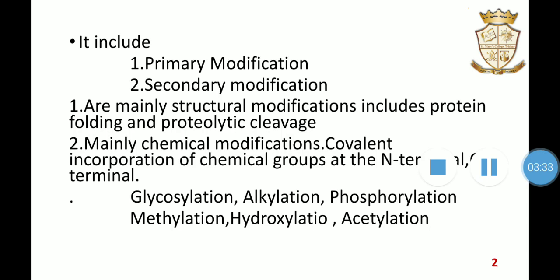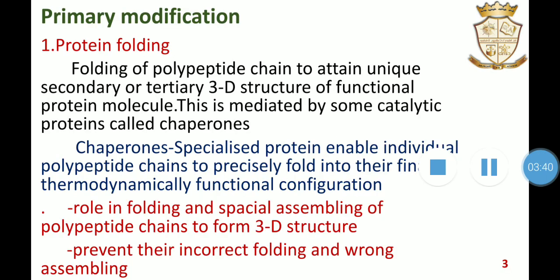The first primary modification is protein folding. Protein folding is the characteristic folding of a nascent linear polypeptide chain to attain a unique secondary or tertiary, i.e. three-dimensional, native structure of a functional protein molecule. It involves many interactions of amino acid residues of a peptide chain. This process is mediated by some catalytic proteins known as chaperones.